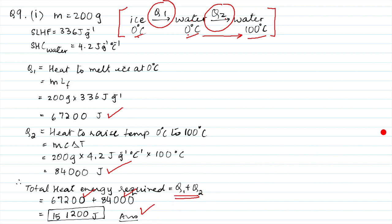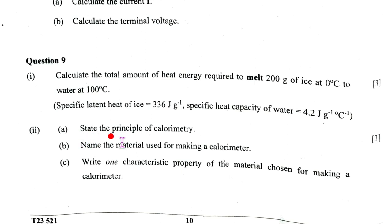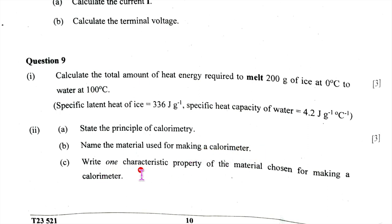Question 9, second subpart: The principle of calorimetry states that at equilibrium, heat lost by the hot body equals heat gained by the cold body. The calorimeter is made of a thin sheet of copper. One characteristic property: copper has a low specific heat capacity.